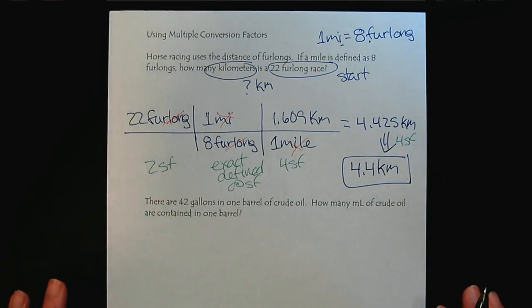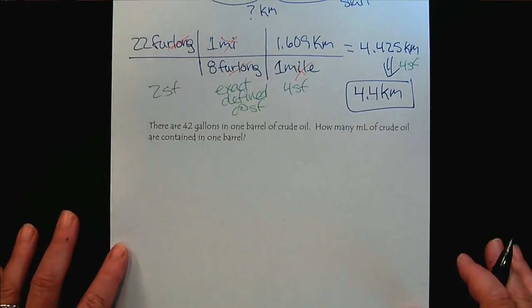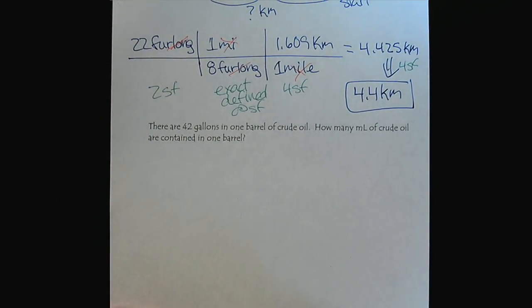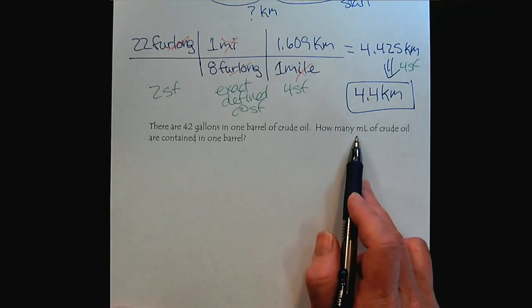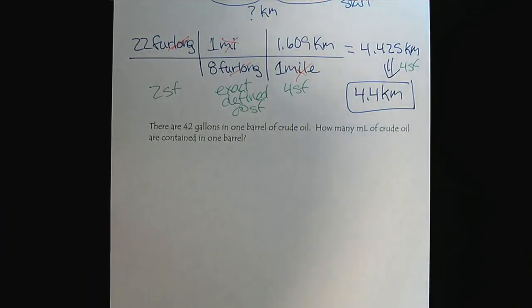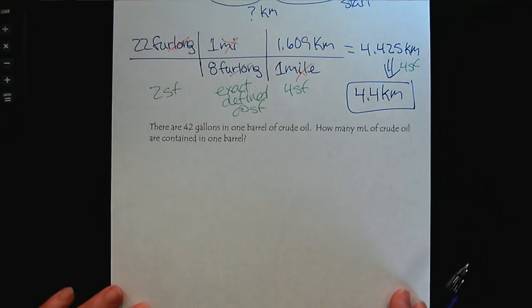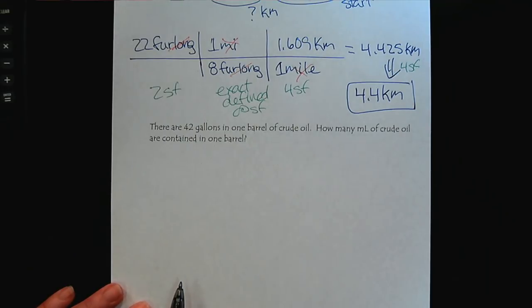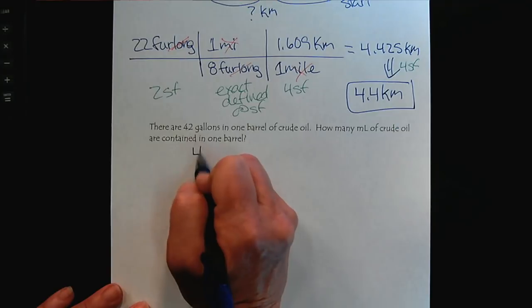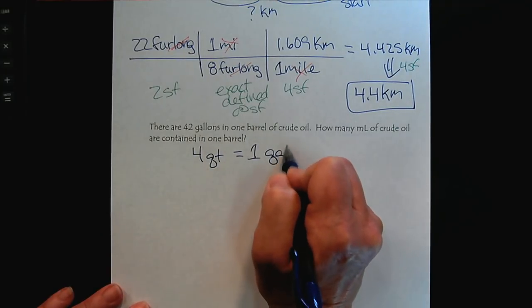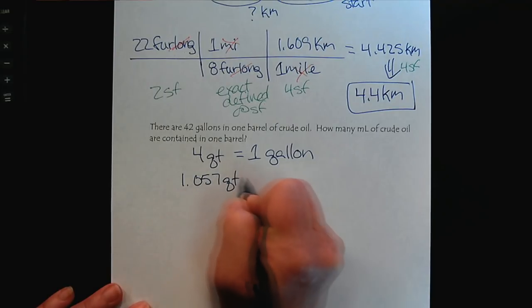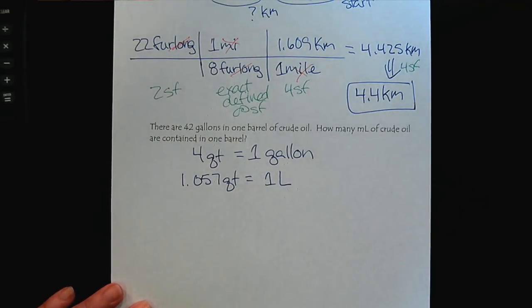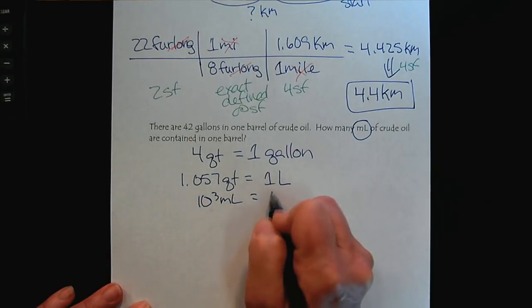So we haven't worked with volume too much yet. Let's practice. We'll do one more practice problem and practice with volume. So there are 42 gallons in one barrel of crude oil. How many milliliters of crude oil are contained in one barrel? So this is taking advantage of the English system. So you need to know that there are 4 quarts in one gallon. And then that links us to our bridge. Because there are 1.057 quarts in a liter. And so we're asked to get to milliliters. And then we know there are 1,000 milliliters in a liter.